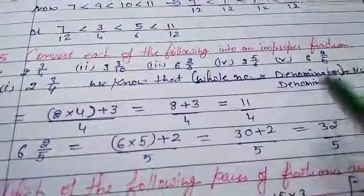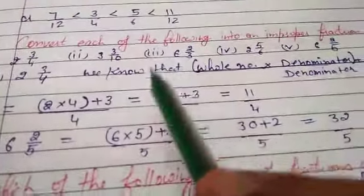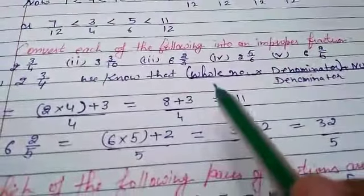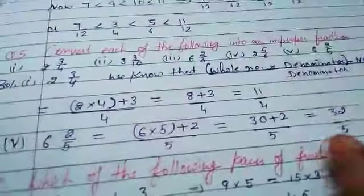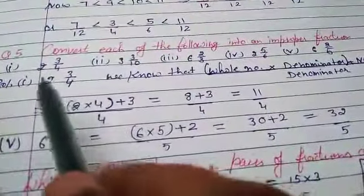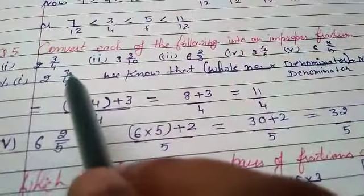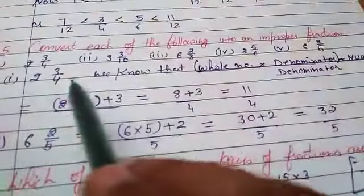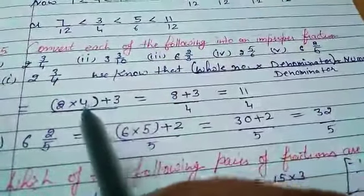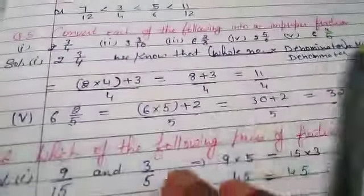Next question is convert each of the following mixed fractions to improper fractions. The formula is: whole number multiply by denominator, then plus numerator, divided by denominator. For 2 whole 3/4: 2 times 4 is 8, 8 plus 3 is 11, so 11/4 is your answer.